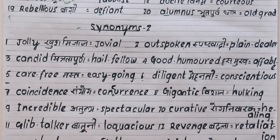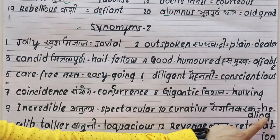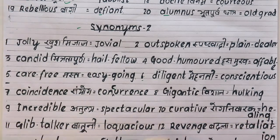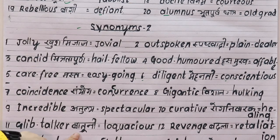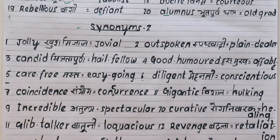Eleventh is 'glib talker', meaning someone who talks too much — a chatty person. The synonym is 'loquacious'. For example: you are a glib talker, you are a loquacious person. Twelfth is 'revenge', meaning to take revenge or retaliate. The synonym is 'retaliation'. For example: I will definitely take retaliation.